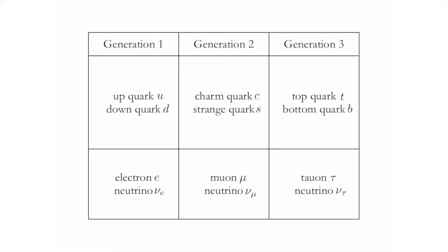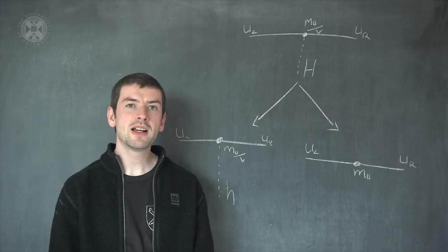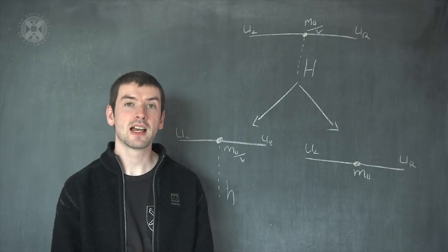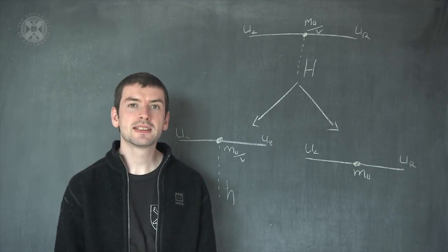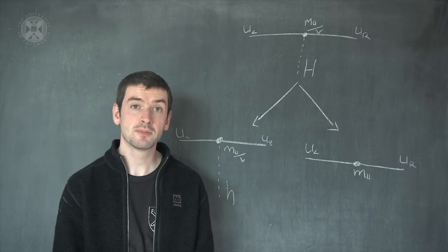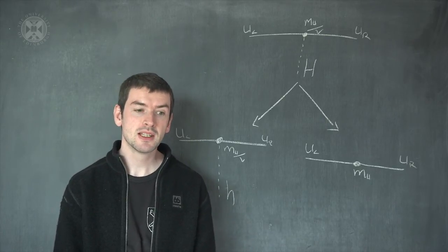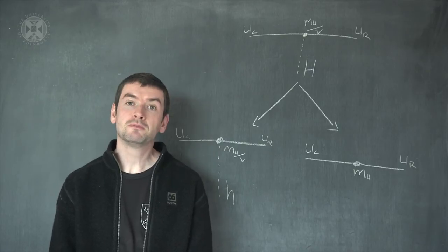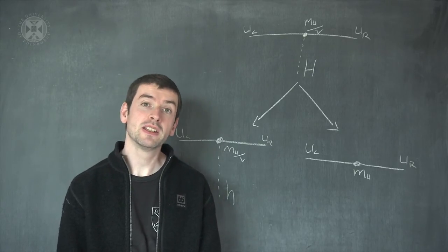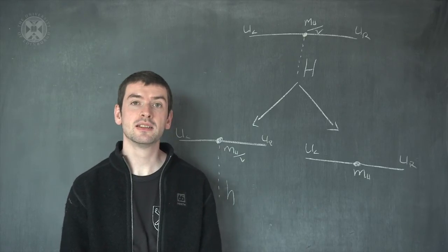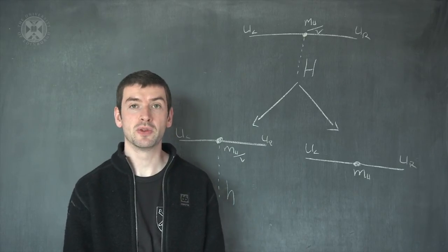These particles, other than their mass, have exactly the same properties as the familiar up-down quarks, the electron and the first generation neutrino. We've now learned all of the details of physics at the deepest level we currently understand it. So let's use this knowledge to understand how the Higgs boson was discovered at CERN. To do that, there are two things we have to understand. The first is, how is the Higgs boson produced? And the second is, how did we know that a Higgs boson was produced?